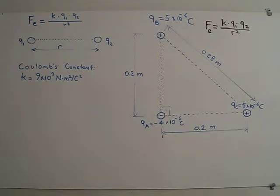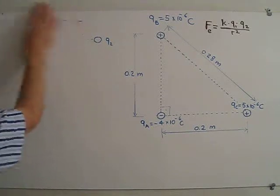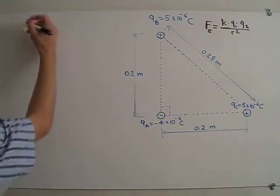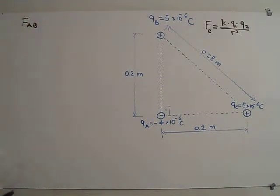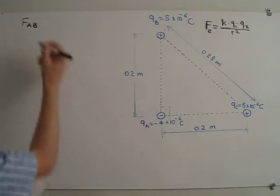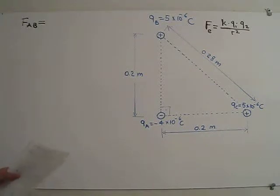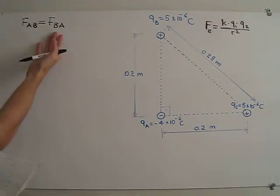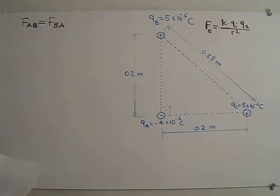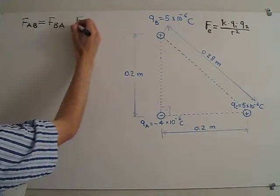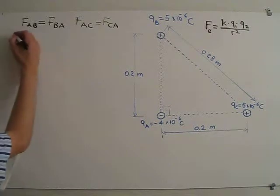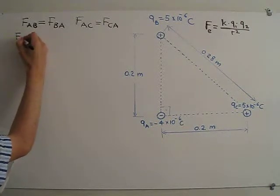So we now calculate the electric force acting on each charge. Let us start by considering FAB, the force exerted on A by charge B. For electric force we know that FAB is equal to FBA in magnitude — these two are equal in magnitude but opposite in direction. Similarly, FAC will be equal to FCA but opposite in direction. So let us first calculate the magnitude of FAB.